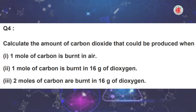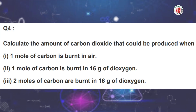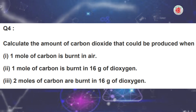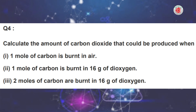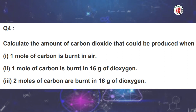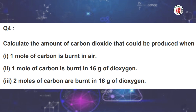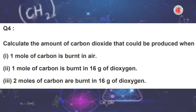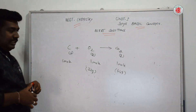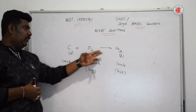The next question is: calculate the amount of carbon dioxide that could be produced when — first category: one mole of carbon is burned in air; second: one mole of carbon is burned in 16 grams of dioxygen; and third: two moles of carbon are burned in 16 grams of dioxygen. Let us write the chemical equation: carbon reacting with oxygen to form carbon dioxide.